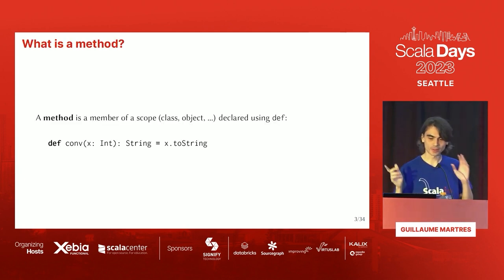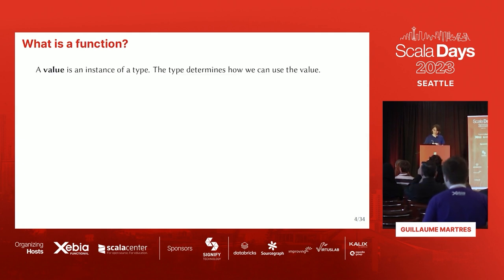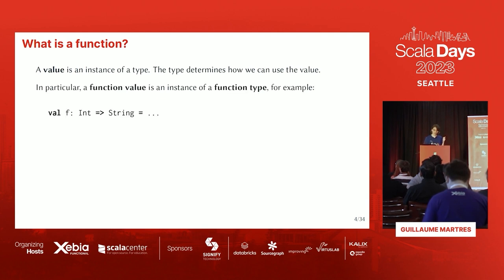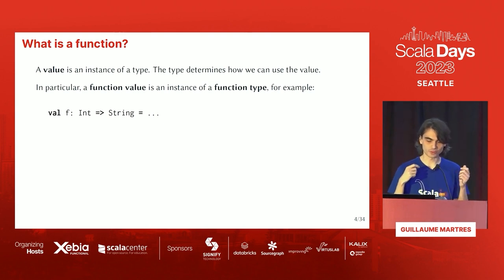Let's get started by defining what a method is. In Scala, a method is always a member of some class, object, or local block, and declared using def. And what's a function? First I have to define what a value is — a value is an instance of some type, and the type tells us what we can do with this value, like which methods we can call on it. A function value is an instance of a function type. Here, F is a function value because it has a function type from int to string.